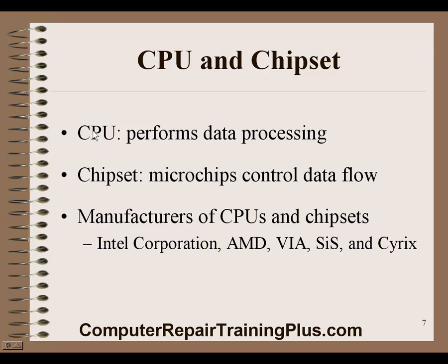CPU and chipsets: the CPU performs the data processing — all the processes, instructions, and software are processed through the CPU. The chipsets are small microchips on the motherboard that control the data flow. Chipsets and the CPU are important to understand because your computer's performance is based on your CPU, your chipsets, your memory, and your video card.